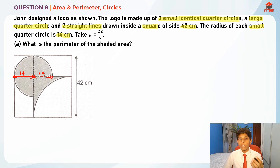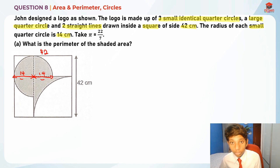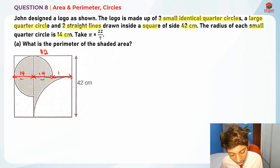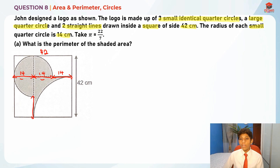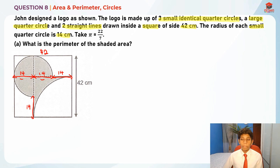In order to find the length of the two straight lines in the square, we're going to take 42 − 14 − 14 − 14, because this is a square with equal lengths. So 42 − 14 − 14 − 14 gives us 14. We can see that all the lengths here are actually the same, so the length of the two straight lines drawn inside the square is 14cm each.